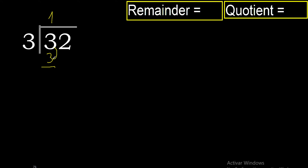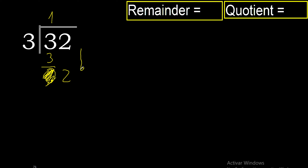3 minus 3 is 0; bring down the 2. 2 is less than 3, therefore complete with another number. There is no number that goes down, therefore finish. Finish with the number that descended — complete here with 0.